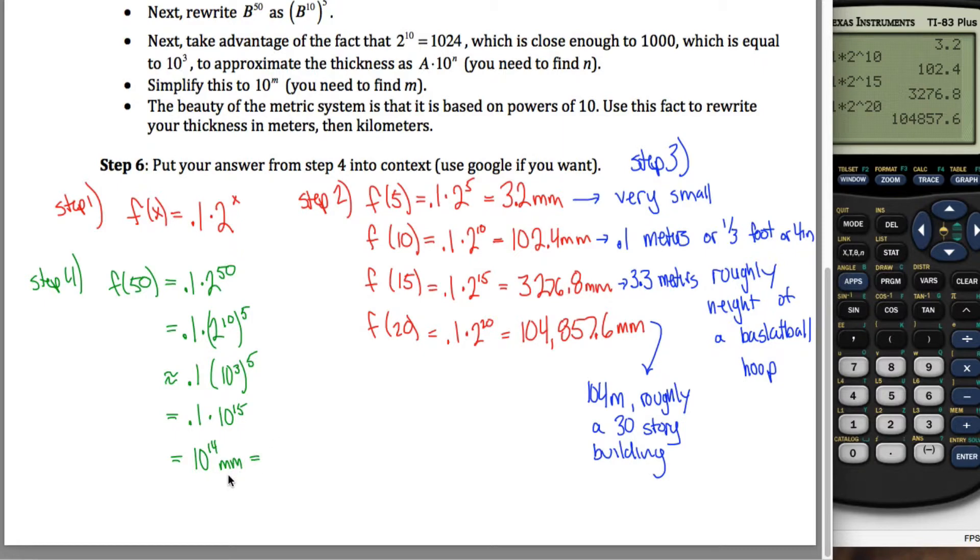But wait a minute, 10 to the 14th millimeters, that's a 1 with 14 zeros after it in millimeters. If I want to convert those to meters, all I would have to do is, I don't know, divide by 1,000. Dividing by 1,000 would be the same as dividing by 10 to the 3rd power. I can write that, I guess, 10 to the 14th over 10 to the 3rd meters. In other words, 10 to the 11th meters, which by the same logic is 10 to the 8th kilometers.